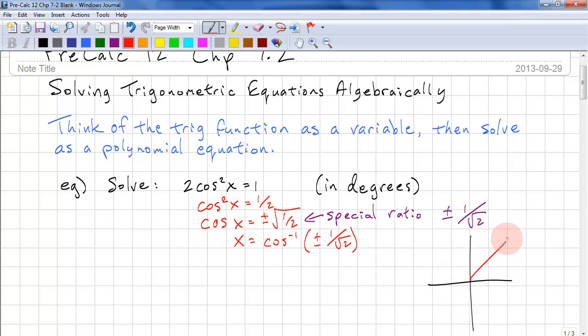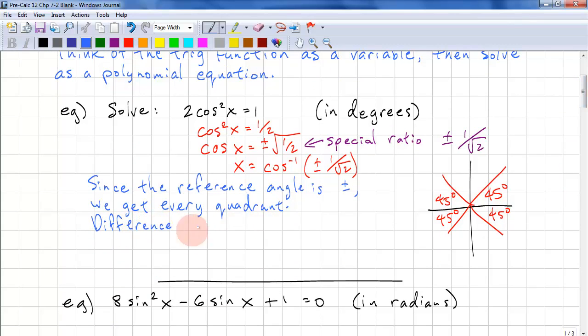And the way this looks is 45, 45, 45, 45. Since these are all 45s and these are offset by 90 degrees for each one, and we have plus or minus cos, so we cover every single quadrant. So our answer is 45 degrees plus 90 degrees times n, where n is the set of all integers.